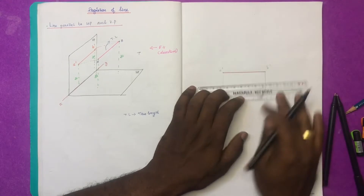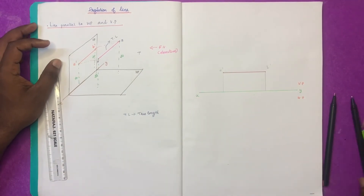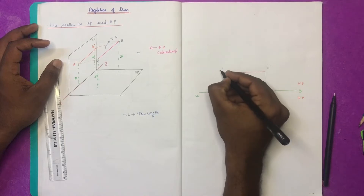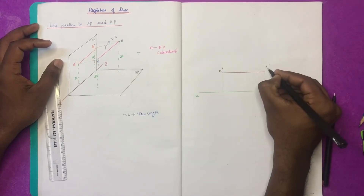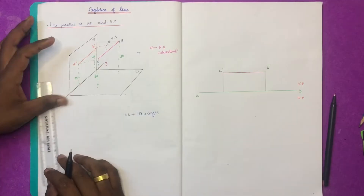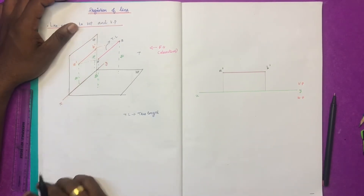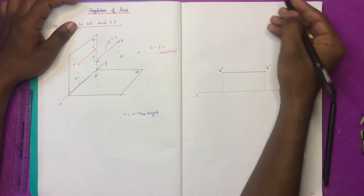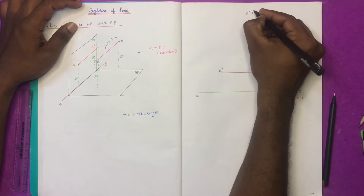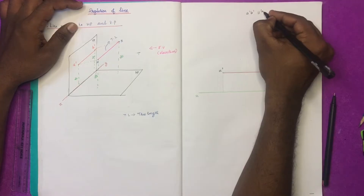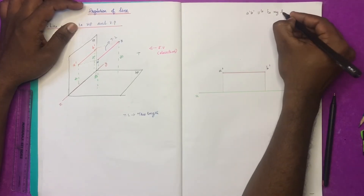This is the true length of the line. One conclusion: A dash B dash is parallel to this line — that is the elevation.